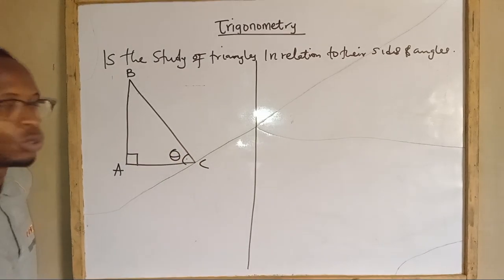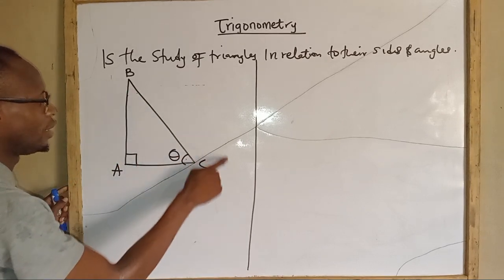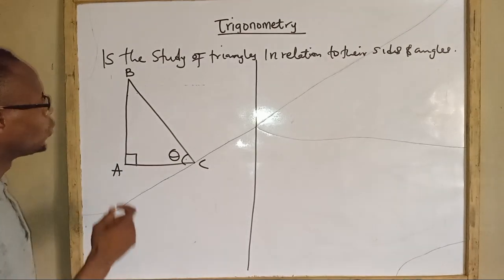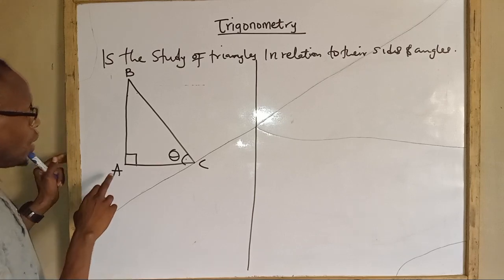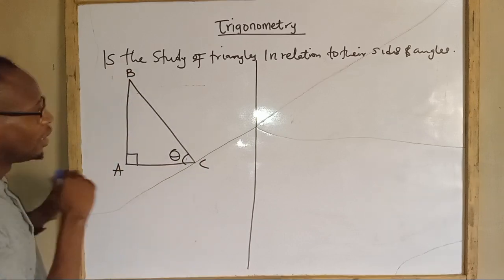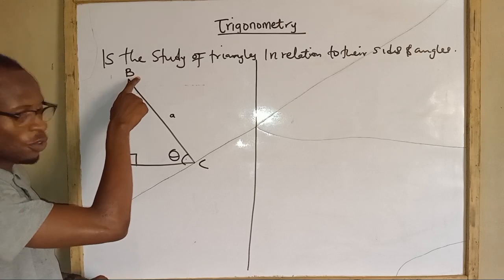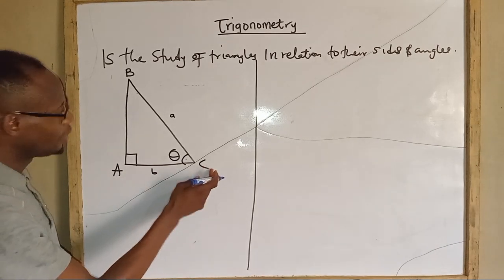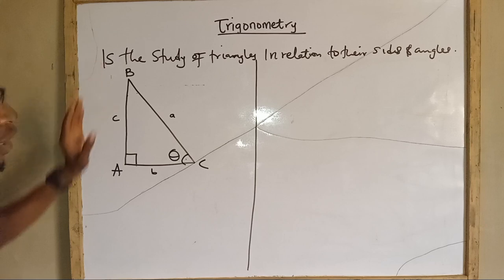Let's call that acute angle theta, which we don't know. In a triangle, the capital letters represent the angles — angle A is 90, angle B can be any value, and angle C is theta. With these three angles, we also get three sides. The line opposite angle A is side a (lowercase), the line opposite angle B is side b, and the line opposite angle C is side c.